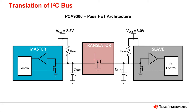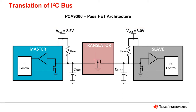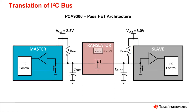Let's first consider the idle state, where both sides are high and neither side of the translator is being pulled low. VCC1 is equal to 2.5 volts, and VCC2 is equal to 5.0 volts. All the FETs are off. Side 1 of the bus will be pulled to 2.5 volts via RPU1, and side 2 of the bus will be pulled up to 5.0 volts via RPU2. There is a voltage on the translator's pass-FET gate, labeled V-gate, and in this example it is 2.5 volts.